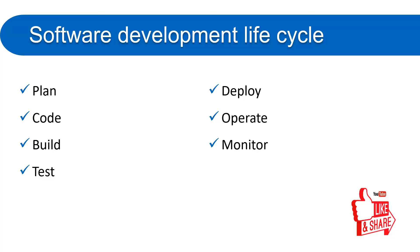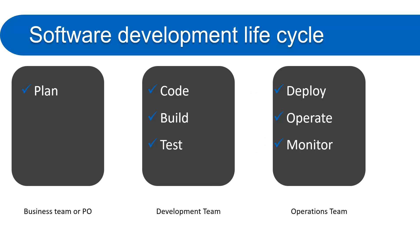If you are working in a startup or have a small team, all these steps are done by the same team. But in a big organization, or even a small one that follows a process, things are different — all these steps are done by different teams. For planning, we have a business team or product owner who sits with the client and works on the planning. Then we have the development team — developers and testers — who code, build, and test the product. Finally, we have the operations team whose main work is to deploy, monitor, and operate the code on the server.